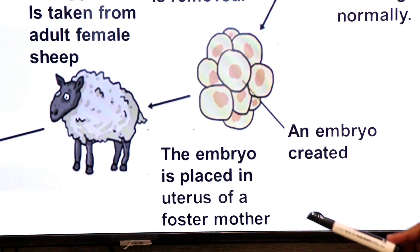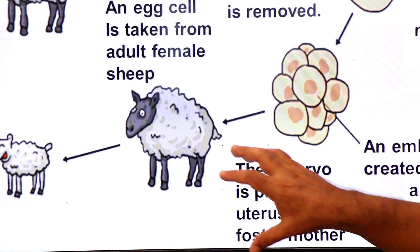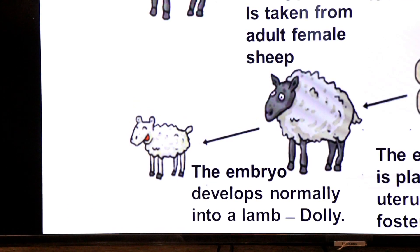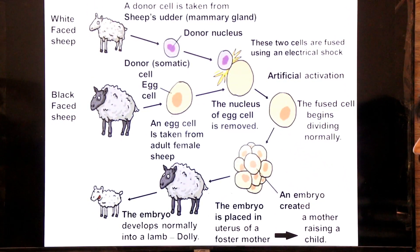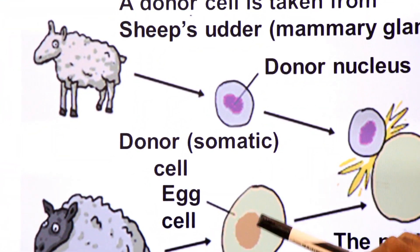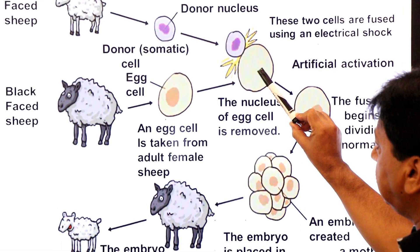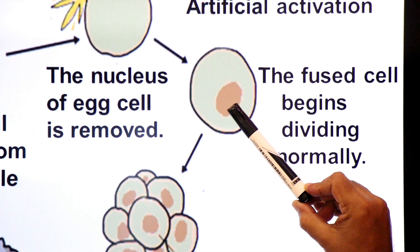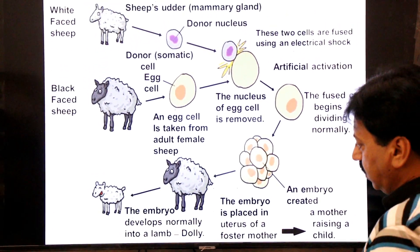The embryo is placed in the uterus of a foster mother — a foster mother is a mother raising a child that is not biologically hers. The embryo develops normally into a lamb called Dolly. This is how scientists created the Dolly sheep clone — the first mammal to be cloned — using the somatic cell nuclear transfer technique. A somatic cell was taken from one sheep, a cell was taken from another sheep, the nucleus of one cell was removed, the somatic cell nucleus was transferred into it, it was artificially activated to divide, an embryo was created, the embryo was implanted into the foster mother's uterus, and from this Dolly sheep was born.